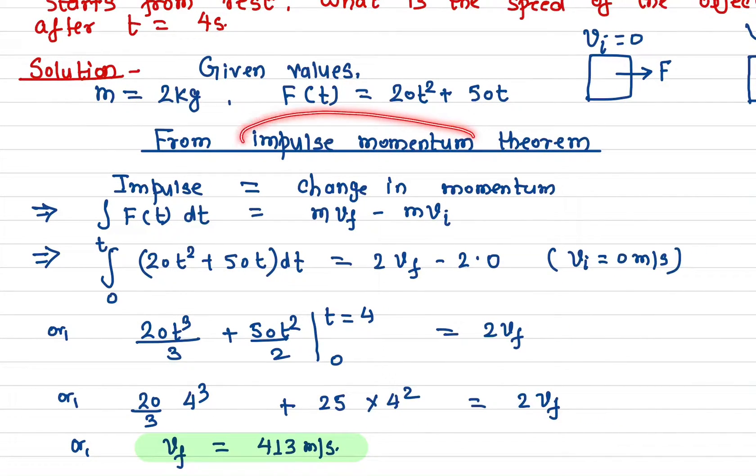What is the impulse momentum theorem? The impulse is equal to the change in momentum. The formula for calculating impulse is ∫F(t)dt—the force times time, taking the integration over the entire interval that gives you the impulse.